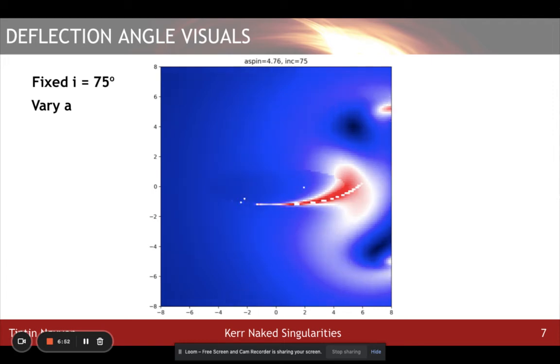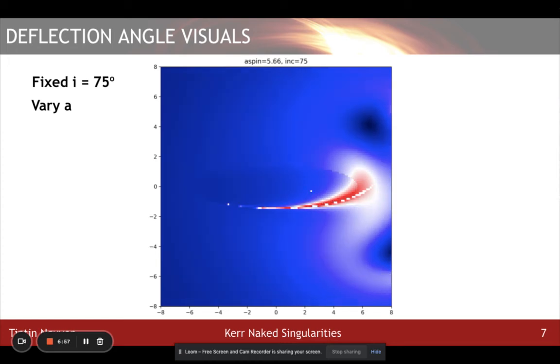When we get to extremely high spin, the ring singularity grows very large, and the photons mostly scattered off instead of spinning around and deflecting directly back. This shows that an extremely high spinning naked singularity has weaker observational signatures.